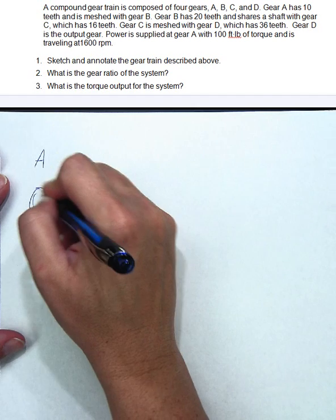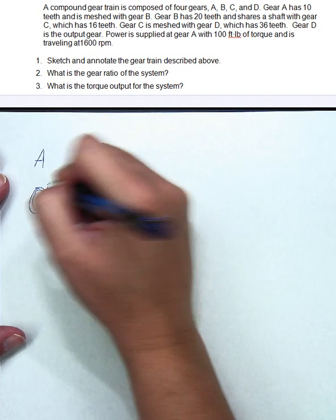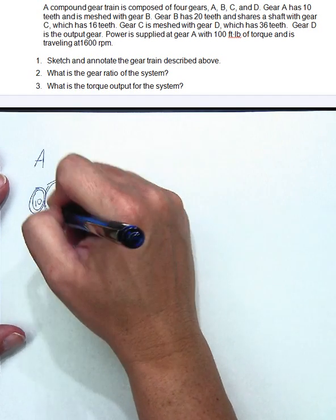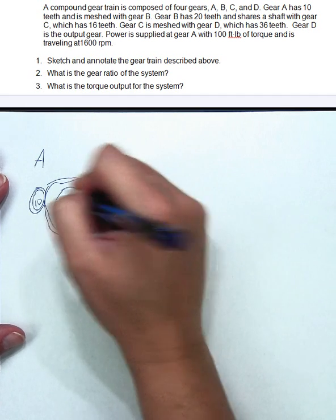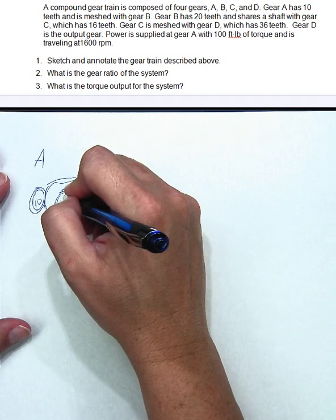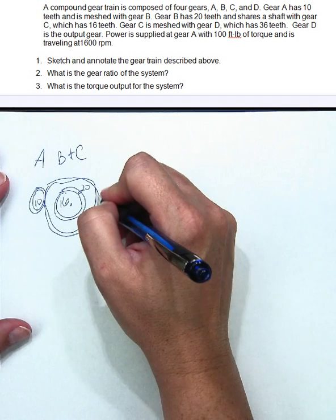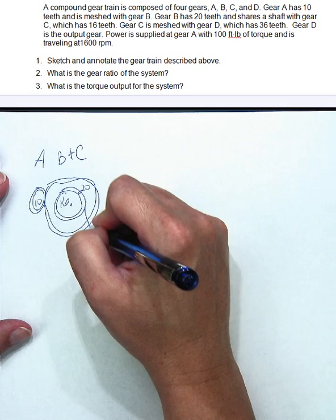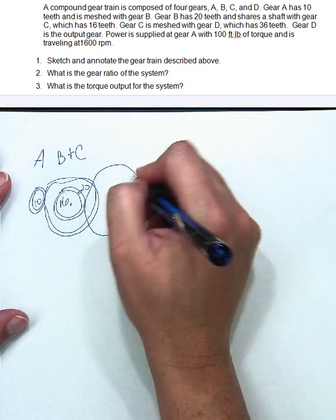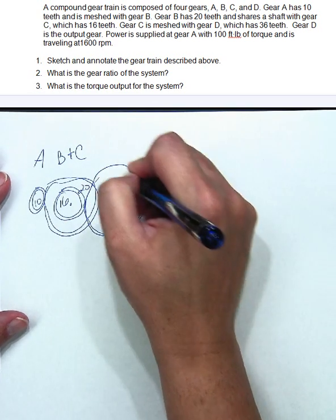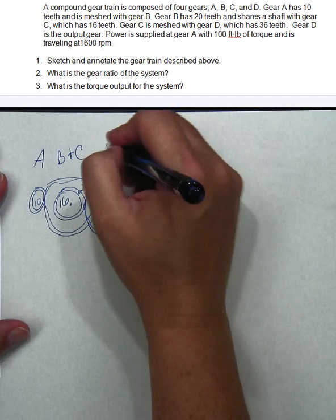A has 10, B has 20, C shares a shaft with them. Okay, so 16 for C, B and C. And then D is meshed with gear C and it has 36. Okay, that's D.